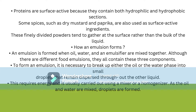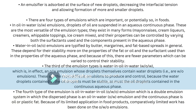An emulsion is formed when oil, water, and an emulsifier are mixed together. Although there are different food emulsions, they all contain these three components. To form an emulsion, it is necessary to break up either the oil or the water phase into small droplets that remain dispersed throughout the other liquid. This requires energy and is usually carried out using a mixer or a homogenizer. As the oil and water are mixed, droplets are formed. An emulsifier is absorbed at the surface of new droplets, decreasing the interfacial tension and allowing formation of smaller and more numerous droplets.